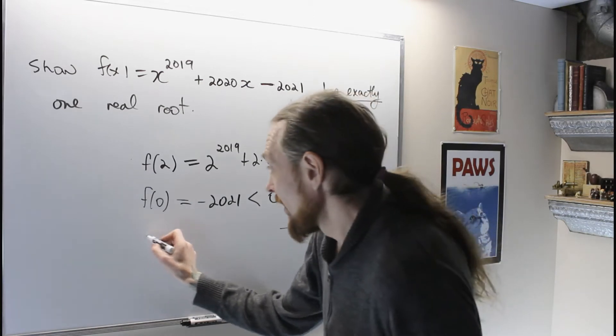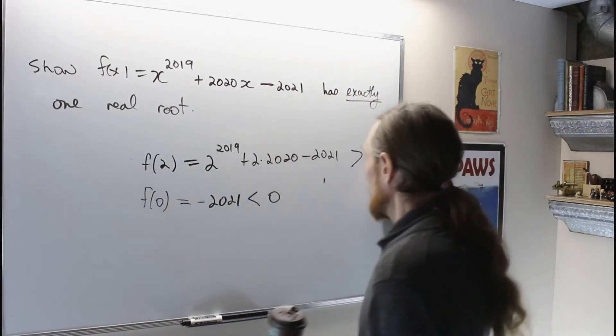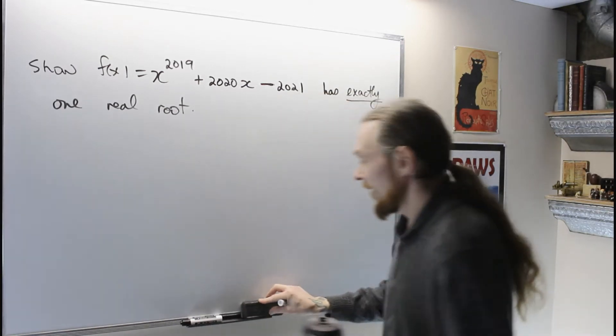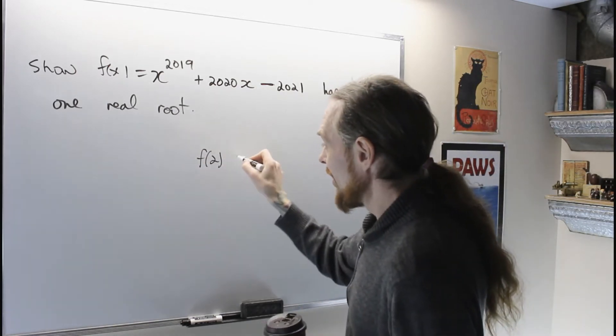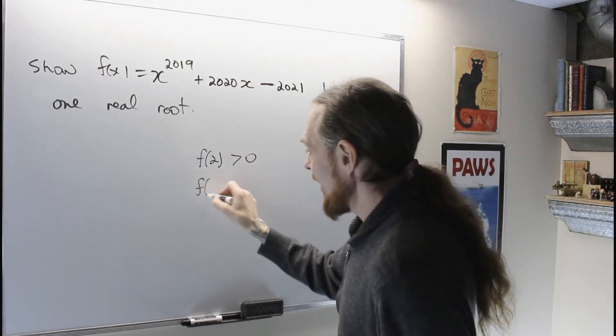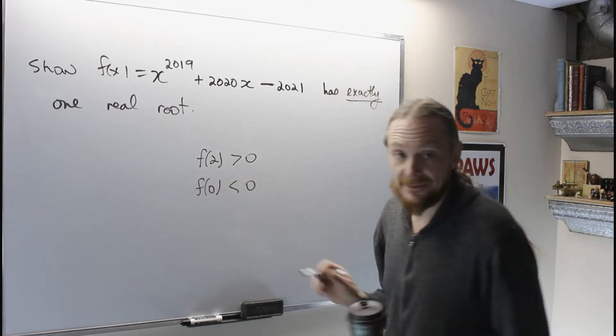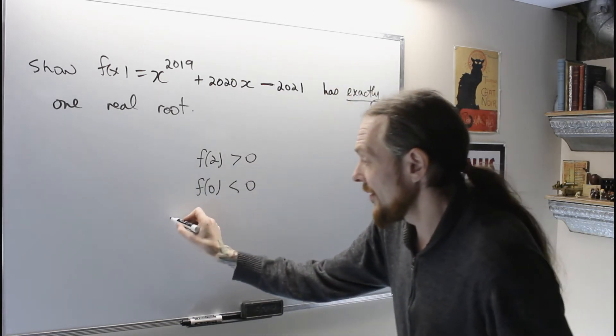So, what do we say, therefore, since, now that we don't need the details, all we're arguing is this, f of 2 was positive, and f of 0 was negative, thus,